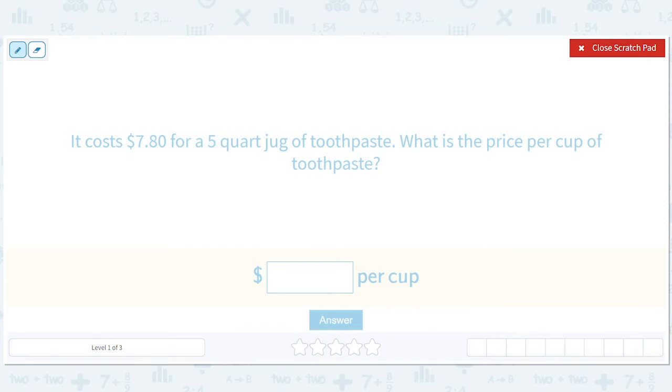It costs $7.80 for a five quart jug of toothpaste. What is the price per cup? Well, how many cups are in a quart? There are four cups in one quart.